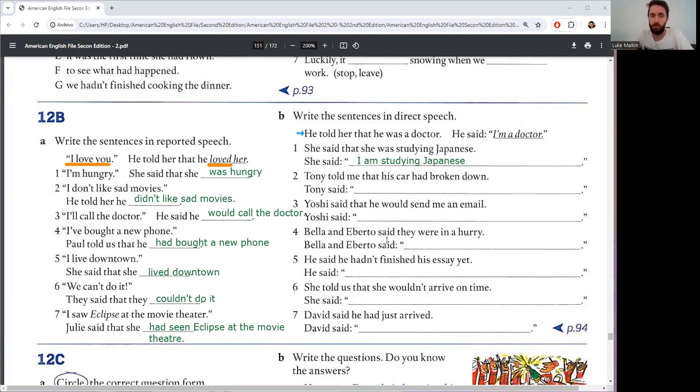Number two. Tony told me that his car had broken down. That's past perfect. So the actual words were, can be two options actually. Past simple or present perfect. Tony told me that his car had broken down. Tony said, my car has broken down. Or, my car broke down is okay. It's okay if you wrote that.